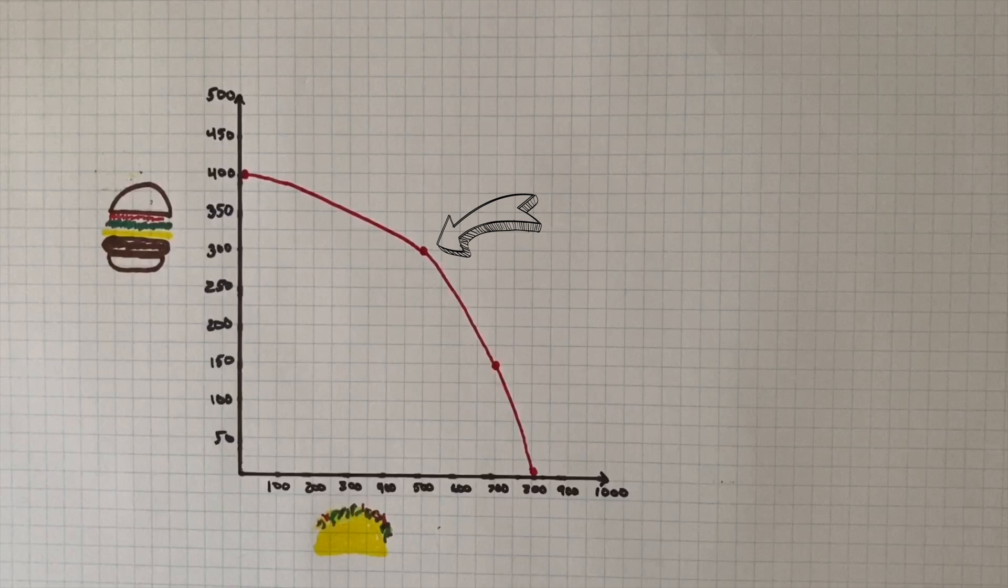Let's say we're producing at that point of 300 hamburgers and 500 tacos. What would be the opportunity cost if we chose to produce 700 tacos instead? Well, in this case, our opportunity cost would be what we would give up, which in this case would have to be 150 hamburgers because we previously were at 300, had to drop down to 150 in order to produce those 700 tacos.